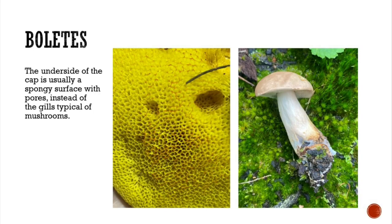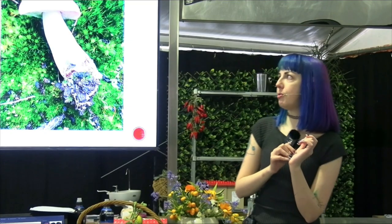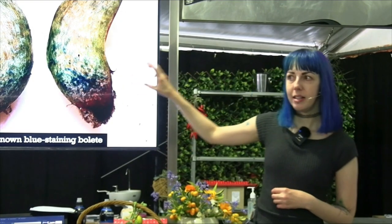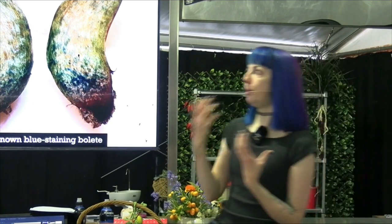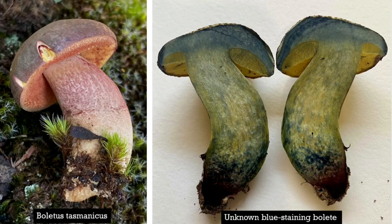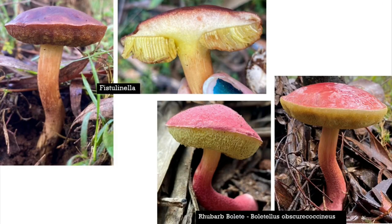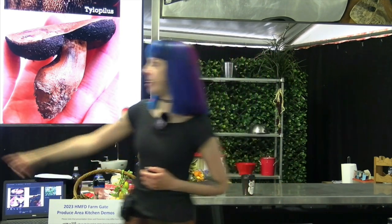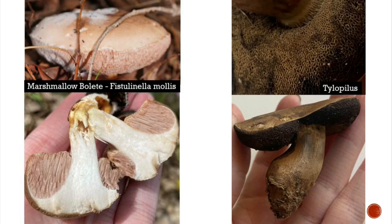Boletes are mushrooms that have a spongy surface with pores instead of gills, like most typical mushrooms. These are all very common around here. One particular bolete — as soon as you cut it, it turns bright bluish-green. That's a chemical reaction — as soon as it oxidizes, the colour changes. Boletes decay very quickly, so they have a very soft, spongy flesh.